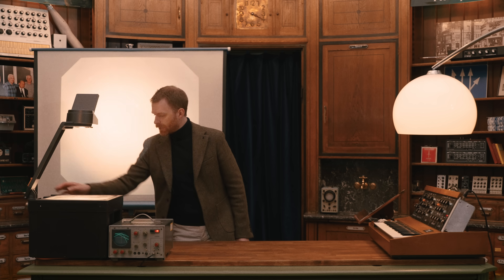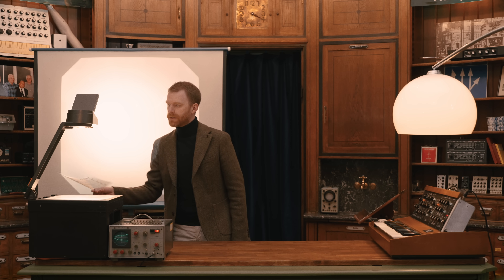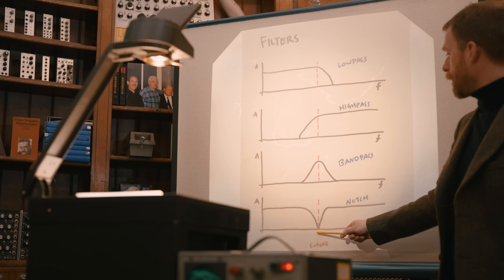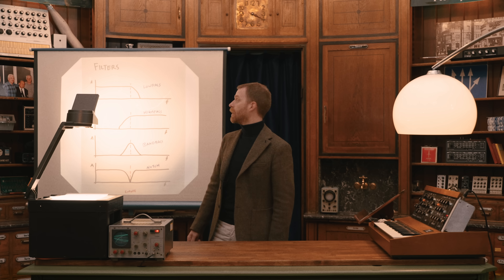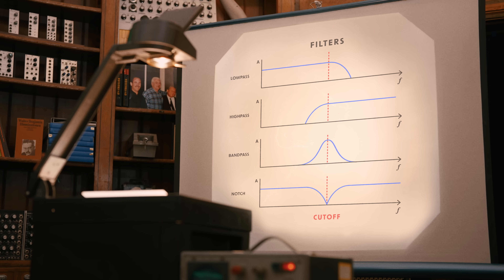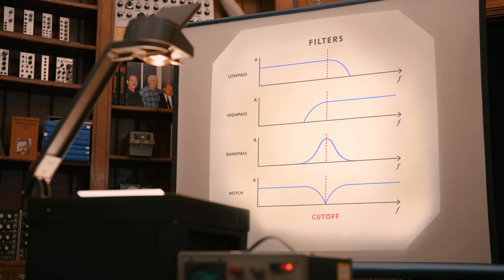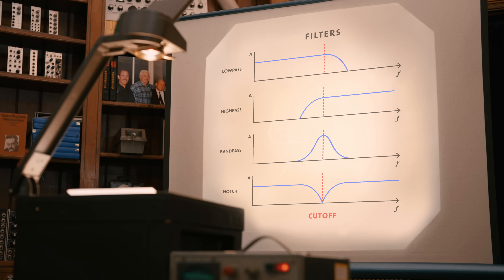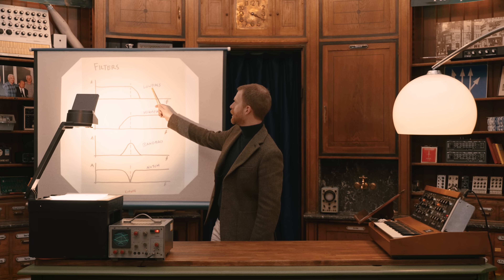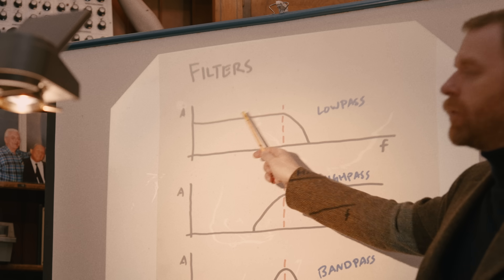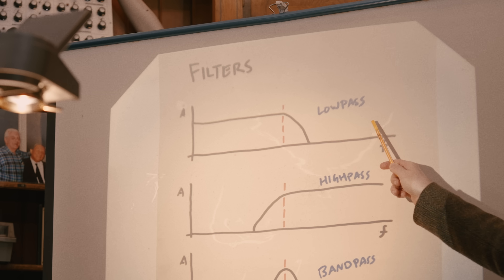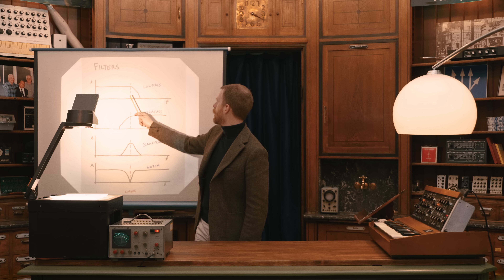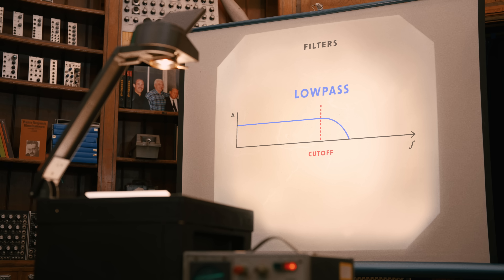A filter is a circuit which removes frequencies. All filters have a control called the cutoff frequency, here in red, which represents the point at which filtering occurs. On these plots, the x-axis represents the frequency spectrum, and the y-axis represents the amplitude or the volume of frequencies present in our signal. A low-pass filter lets through frequencies below the cutoff frequency but filters out all of them above it. So as we move the cutoff frequency control, we let through more or less high frequency content.